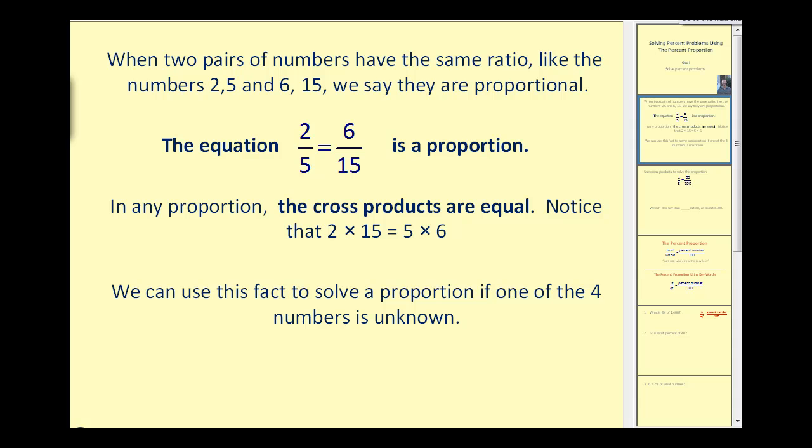Let's first review what a proportion is. When two pairs of numbers have the same ratio, like the numbers 2 and 5 and 6 and 15, we say they are proportional. The equation 2/5 = 6/15 is a proportion. In any proportion, the cross products are equal. Notice that 2 times 15 equals 5 times 6. This is a very important fact because it allows us to solve a proportion if one of the four numbers is unknown.